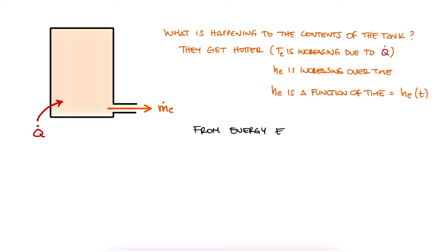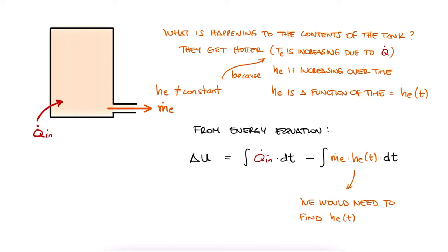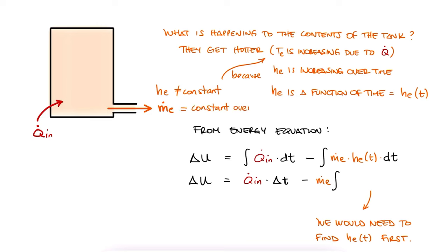Our energy equation would look like the change of internal energy is equal to the integral of q dot n times dt minus the integral of m dot e he dt. And now, since he is not constant, meaning the enthalpy of the fluid flowing out is not constant, because the temperature coming out is increasing, we would have to find a way to describe he as a function of time so that we can integrate. The first term would be fine, the integral of q dot n dt is q dot n times delta t, but for the last one, we can take m dot e out if it's still flowing steadily, but not for he. He would be a function of t, and we'd have to integrate it.